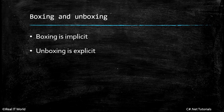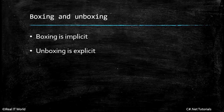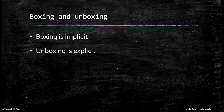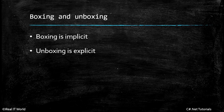Boxing is implicit — if you want to assign any value to object, it will be accepted without any restrictions because object can store any type in C#. So boxing is implicit; we don't need to specify a type conversion. Unboxing, however, is always explicit. When you want to extract a particular value from object, you need to specify what type that value is.